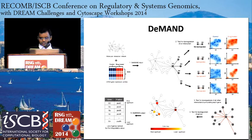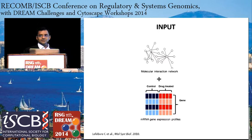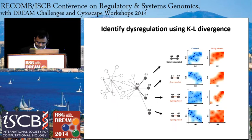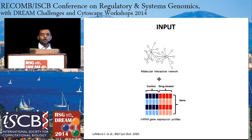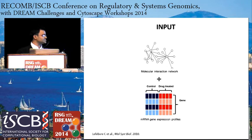Briefly, the algorithm needs two different inputs. One is the context-specific gene regulatory network, and the second is the gene expression profile generated after drug perturbation. It also needs control samples to compare whether the interactions in the network are being dysregulated following the drug perturbation. To infer the gene regulatory network, we use our own algorithms — Arachne, Mindy, and Bay — but you can use any algorithm to infer the gene regulatory network, as long as the network you're inferring is context-specific.